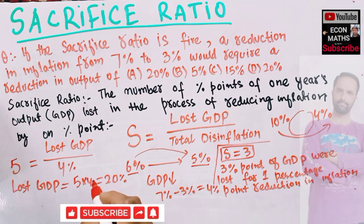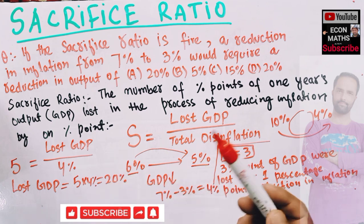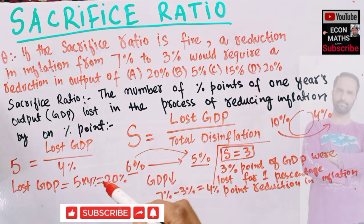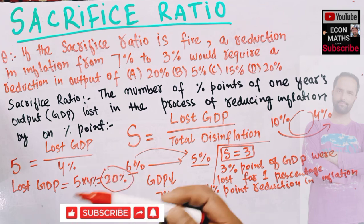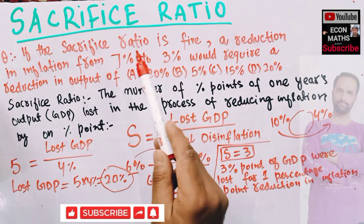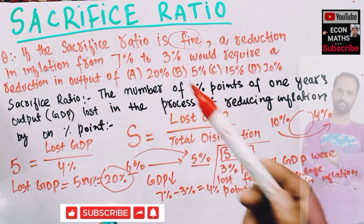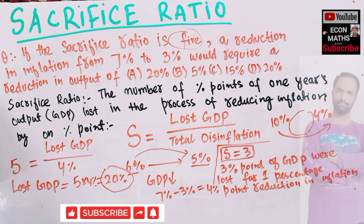So our GDP will get reduced by 20% if we want to reduce inflation from 7% to 3%, given that our sacrifice ratio is 5. Simple stuff — I hope I made myself clear in this video. Thank you.